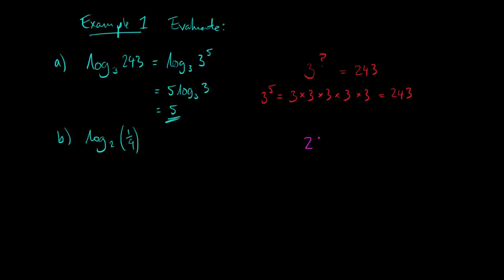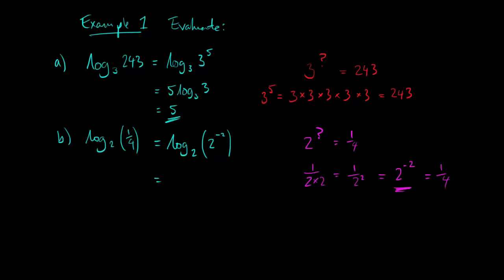For log base 2 of a quarter: 2 to the power of what is a quarter? A quarter is 1 over 4, which is 1 over 2 squared, which is 2 to the power of minus 2. So the power we need to raise the base to is minus 2. We replace a quarter with 2 to the power of minus 2, use the power rule to bring minus 2 to the front, giving minus 2 times log base 2 of 2. Since log base 2 of 2 is 1, the answer is minus 2.